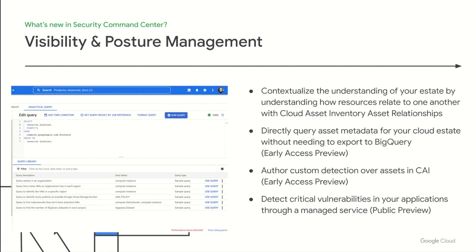Complementing these updates are improvements in Cloud Asset Inventory and Security Command Center's posture management. Cloud Asset Inventory allows you to understand deeper details about your resources through asset relationships — for example, representing information about the App Engine application that a particular App Engine service is in. Analytical querying is also available in early access, allowing you to interrogate your cloud estate directly without having to export it to BigQuery first. Assets in Cloud Asset Inventory are the foundation upon which SCC's early access custom posture detection is built. You can express your own detective controls, and SCC takes care of the rest, producing findings in real time and helping you monitor your posture.